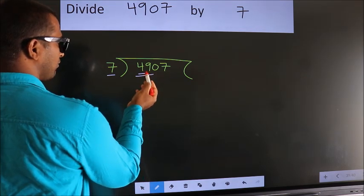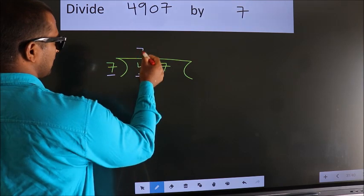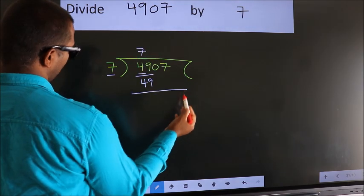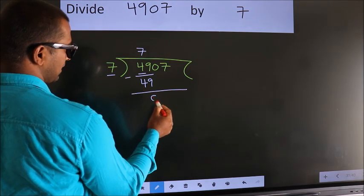When do we get 49? In 7 table. 7 7s 49. Now we should subtract. We get 0.